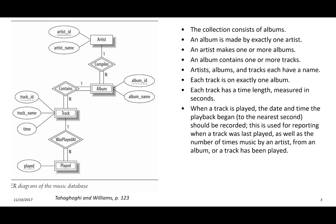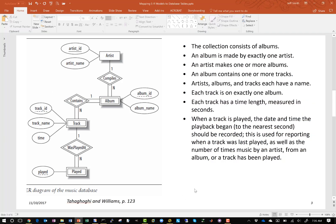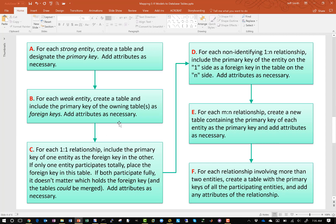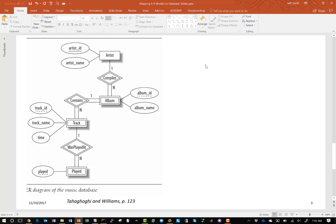Let's get started. I'm going to get out of presentation mode so that I can actually type in PowerPoint. The six-step process that we have in the book starts with step A: for each strong entity, create a table and designate the primary key, and add attributes as necessary. In our ER diagram, we can see that the artist entity is the only strong entity here.